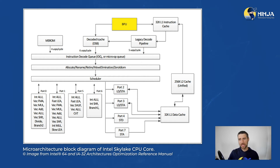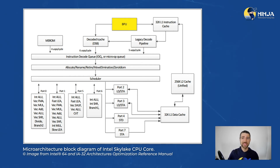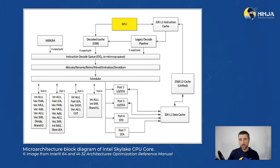On this slide I'm showing you the place of the BPU, or branch predictor unit, on the microarchitecture block diagram. Traditionally, predictions are based on the prior history of the branch, so the branch predictor is essentially a cache. More modern CPUs also employ new types of predictors based on machine learning techniques, and often there is more than one branch predictor inside the CPU core.